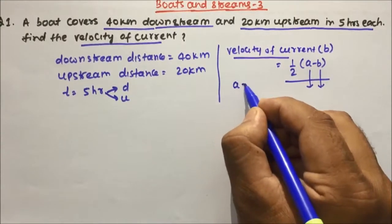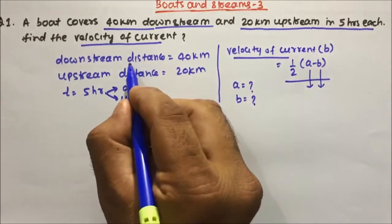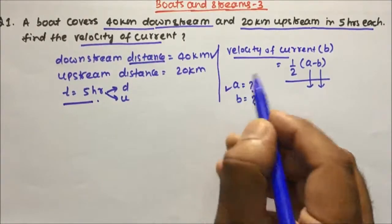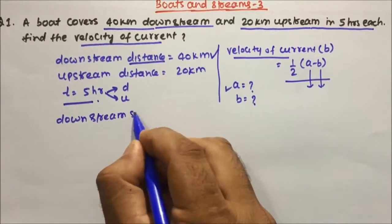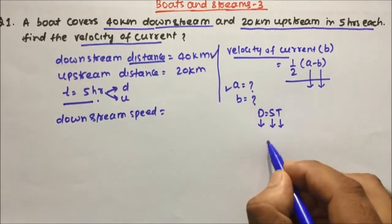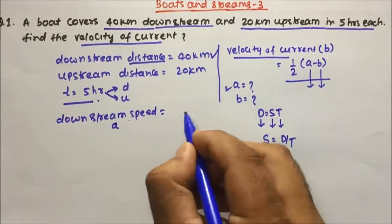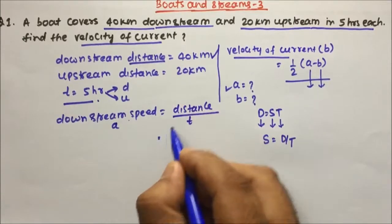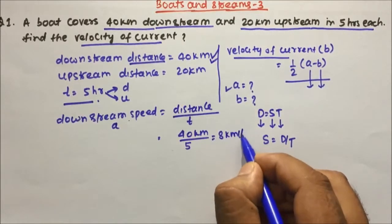The question is: what will be the speed of downstream and what will be the speed of upstream? Distance and time are given, so we can easily calculate the speed. Since distance = speed × time, speed = distance ÷ time. So downstream speed (A) = downstream distance ÷ time = 40 ÷ 5 = 8 km per hour.